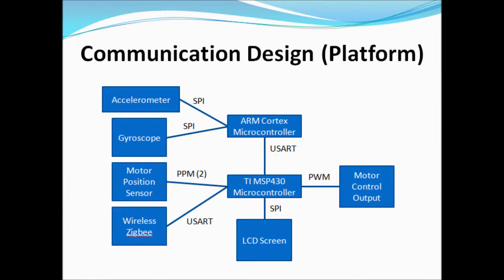This is our communication design for our platform. We have an accelerometer and gyroscope sending data using SPI to our ARM processor. The ARM processor and MSP430 microcontroller are communicating through UART. The MSP430 microcontroller is sending PWM signals to the motor control driver and is also displaying data on the LCD using SPI. We also have a user interface using a PIC microprocessor — it's a PIC16F690 — that has a wireless transmitter on it.